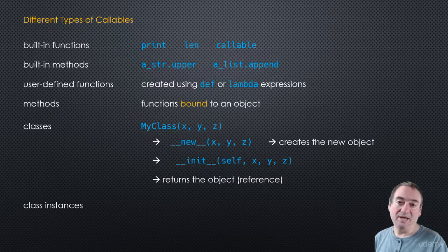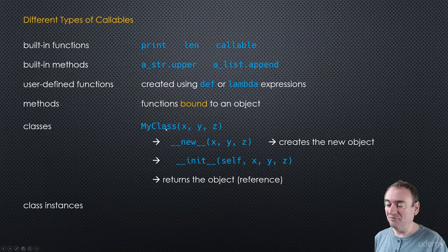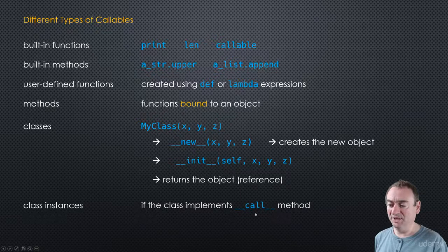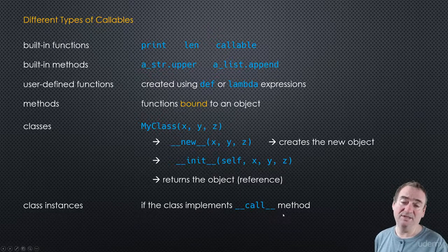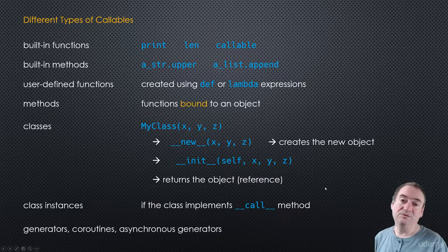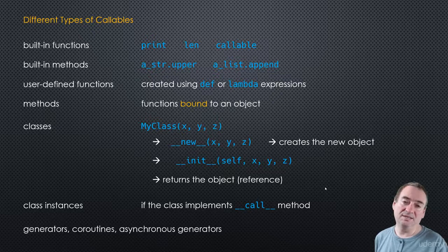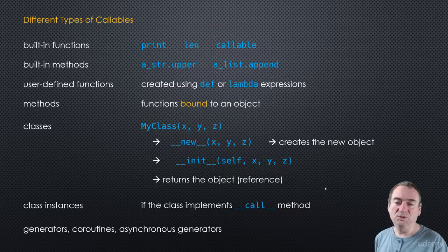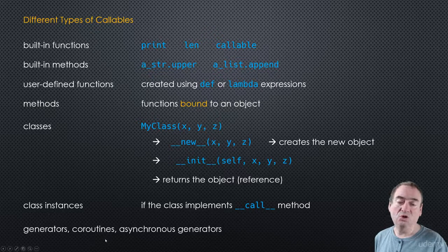Class instances can also be callables. Once you have an instance of my class, it may be callable - you just have to implement the dunder __call__ method, and we'll see that in the code. There are also other things like generators, coroutines, and asynchronous generators - all related to generators - and those are also callables, which we'll see later on in this course.